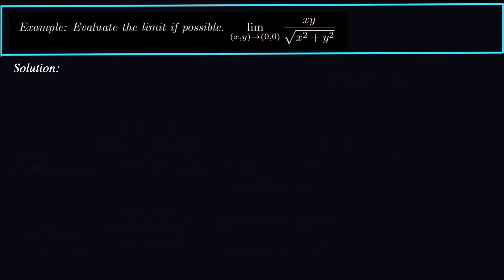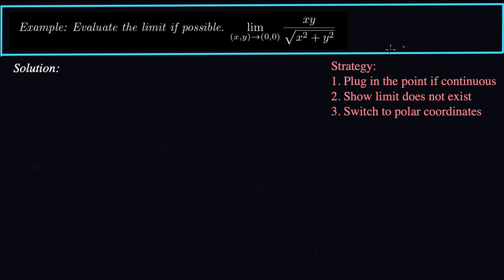Our strategy is: can we just plug the point in directly to the function? Well, let's see — plug in zero, zero and we get zero in the numerator and zero in the denominator. That's indeterminate. So no, we can't plug in this point to the function. It's definitely not continuous there because that denominator is not defined.